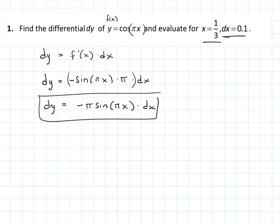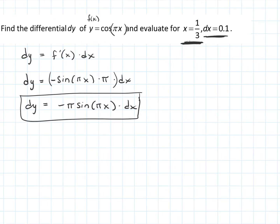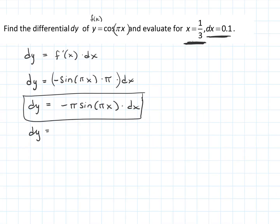If we want to evaluate it at a specific point — say x equals one-third with dx equals 0.1 — we just plug in: dy equals negative π times sine(π times one-third) times 0.1. That becomes negative π times sine(π/3), which is root 3 over 2, times one-tenth.